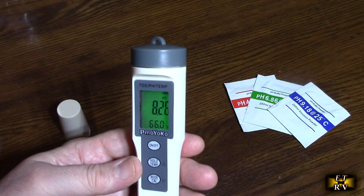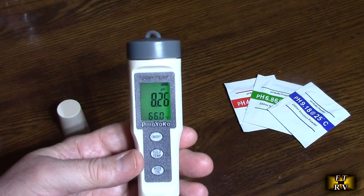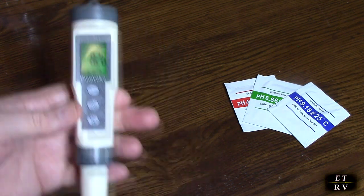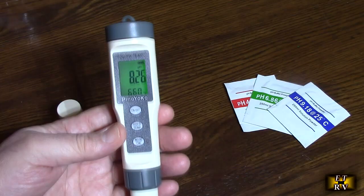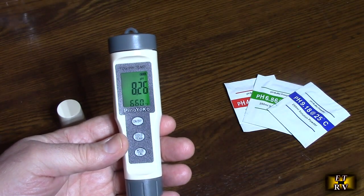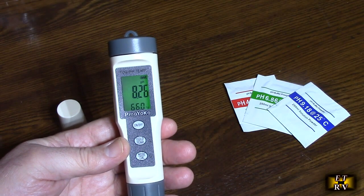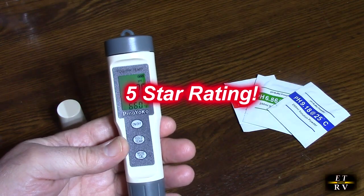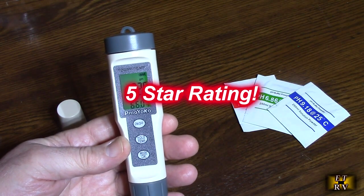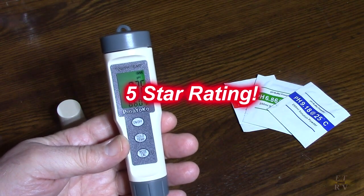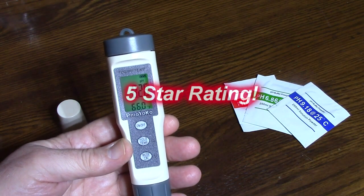It seemed to be really accurate. I compared it to another meter that I have and I didn't even calibrate it. If I wanted to go further and calibrate it with those packets, I could do that. So I'm going to give the PMO YOKO brand pH, TDS meter, and temperature a full five-star rating. I hope this video review helped you with your buying decision. Thank you for watching.